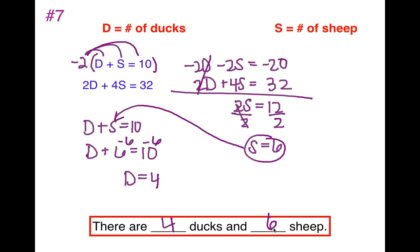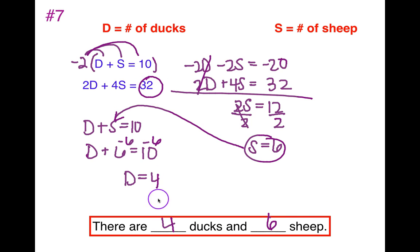To check: four ducks have eight legs and six sheep have 24 legs — 8 + 24 = 32 legs ✓. And 4 + 6 = 10 animals ✓. I highly suggest checking your work like this, because it confirms you're doing it right and all the information matches what was given.